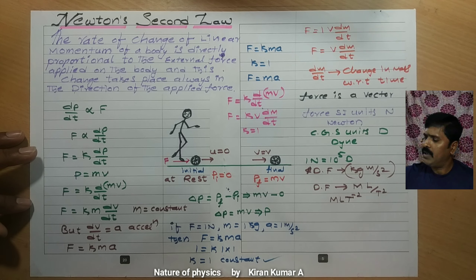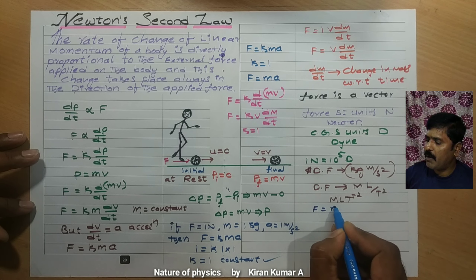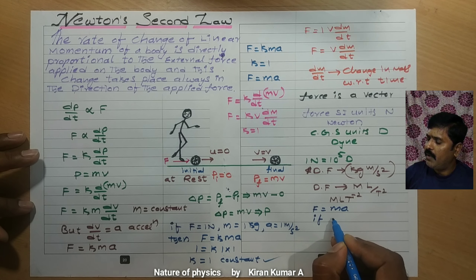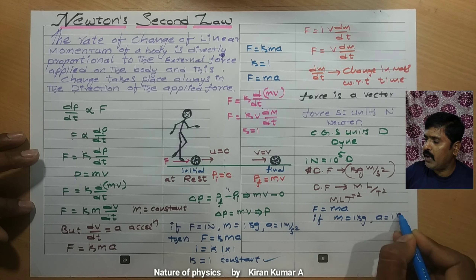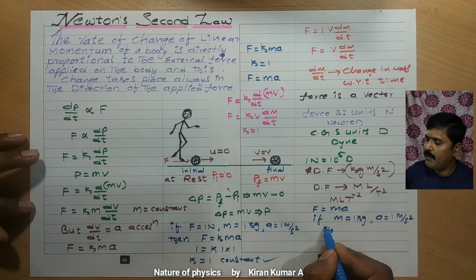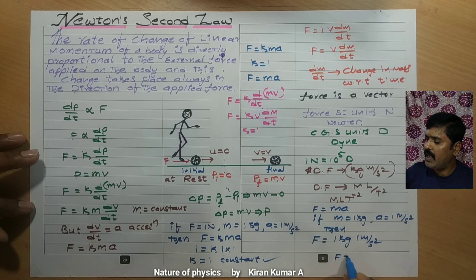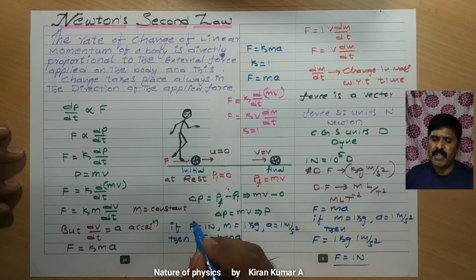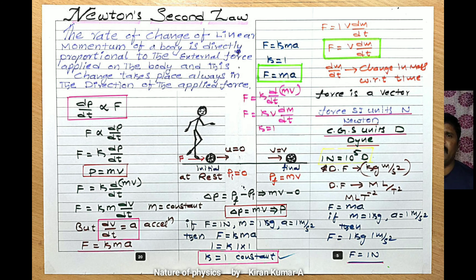Using the formula F equals ma: if mass is equal to 1 kg and acceleration is equal to 1 meter per second squared, then F is equal to 1 kg times 1 m/s², which gives F equal to 1 Newton. This is clear information about Newton's Second Law. Please do like and subscribe to my channel.